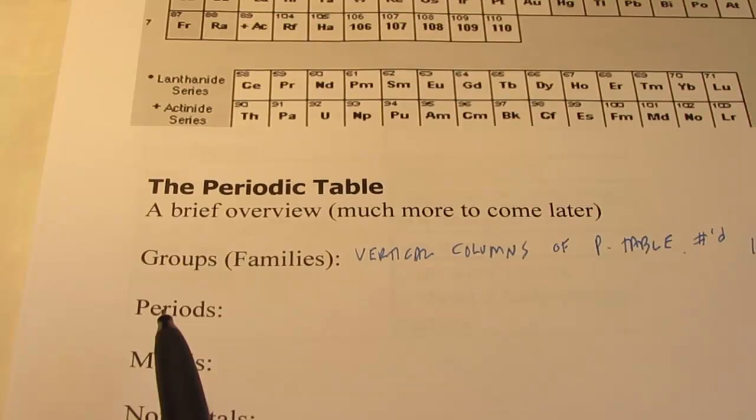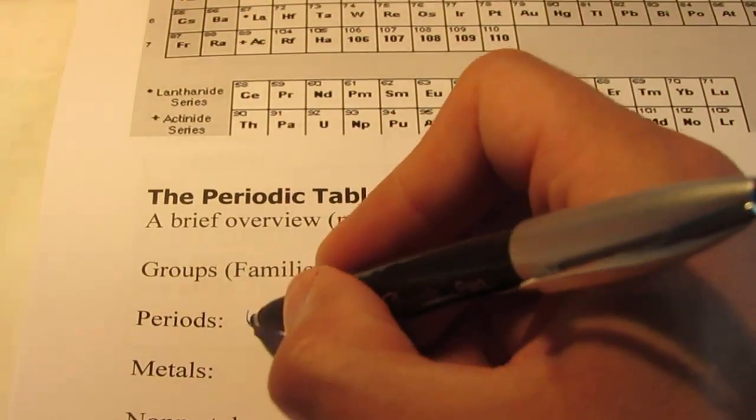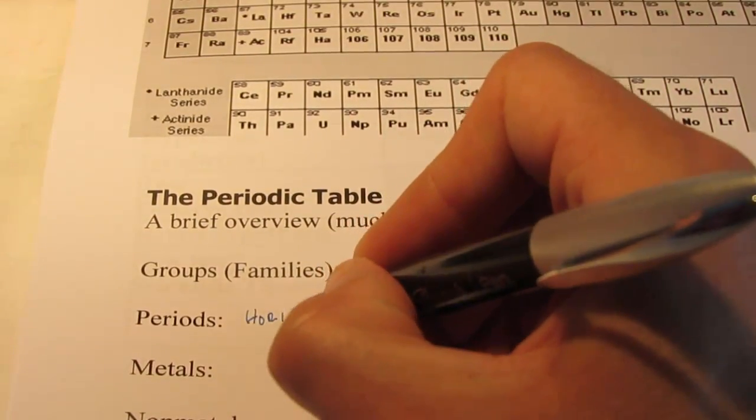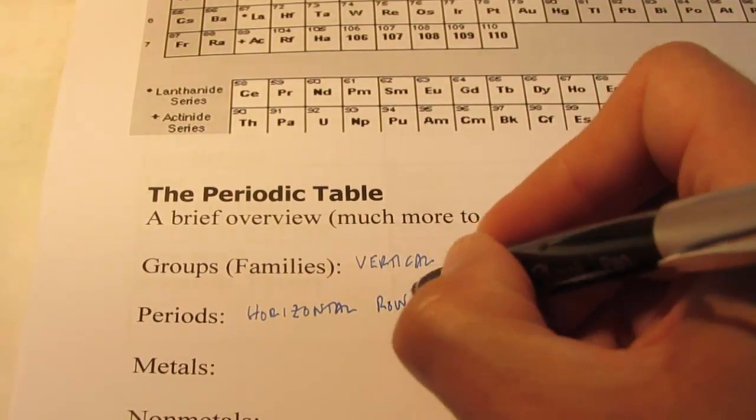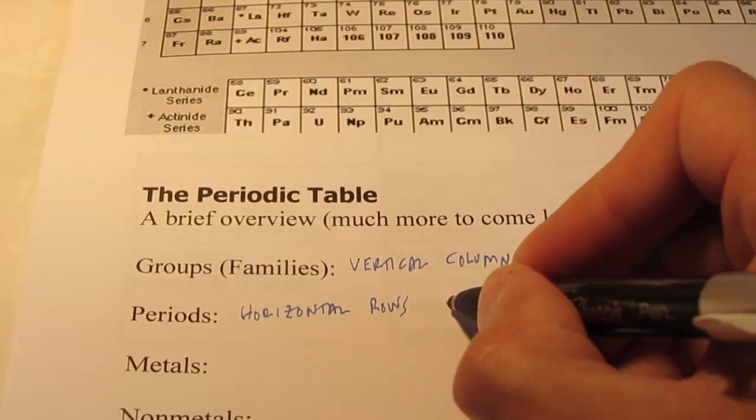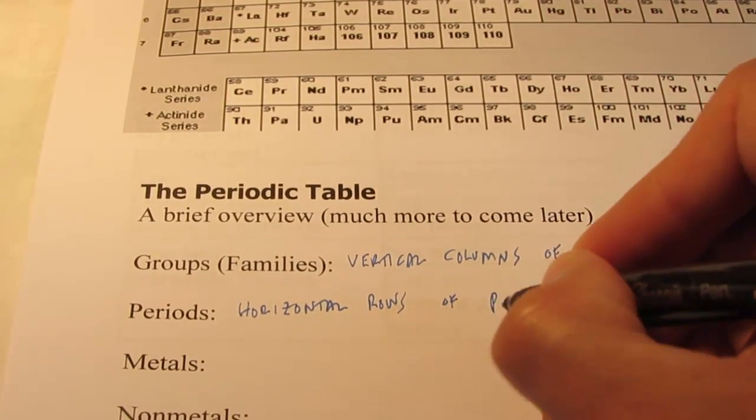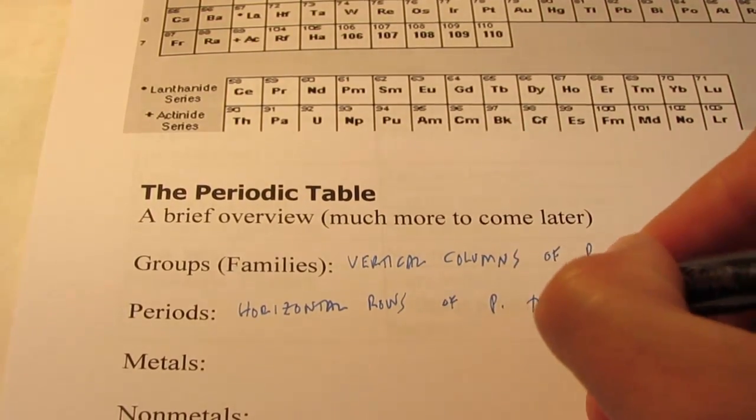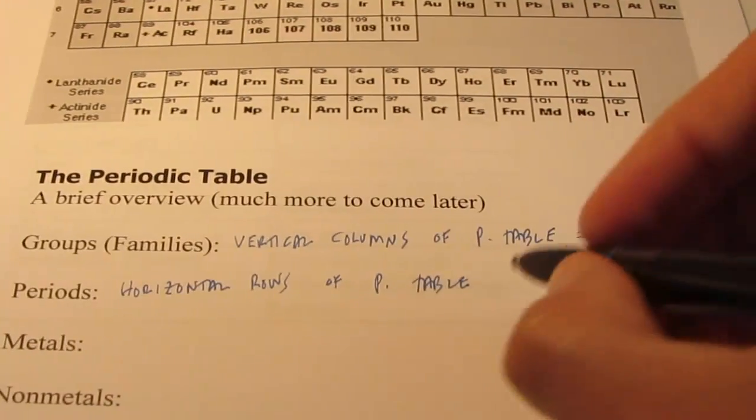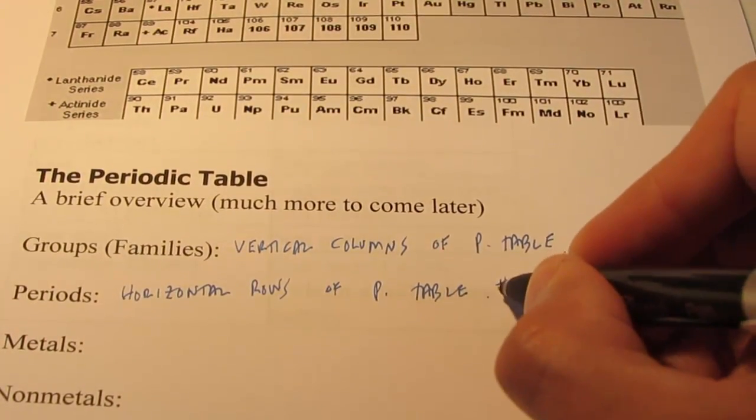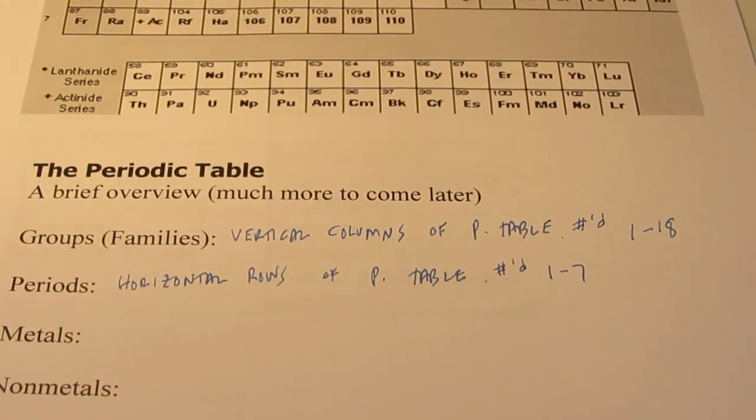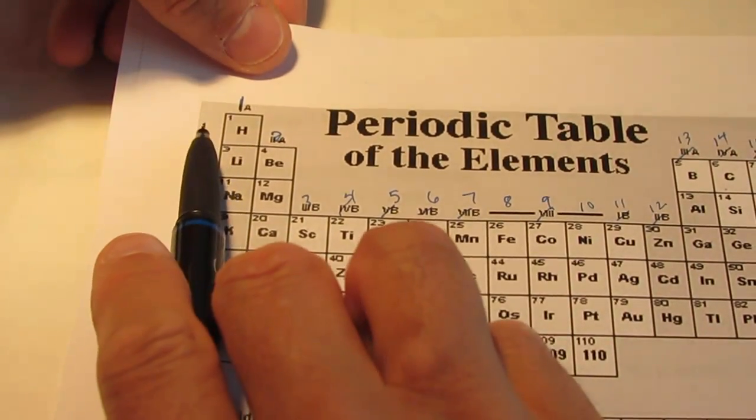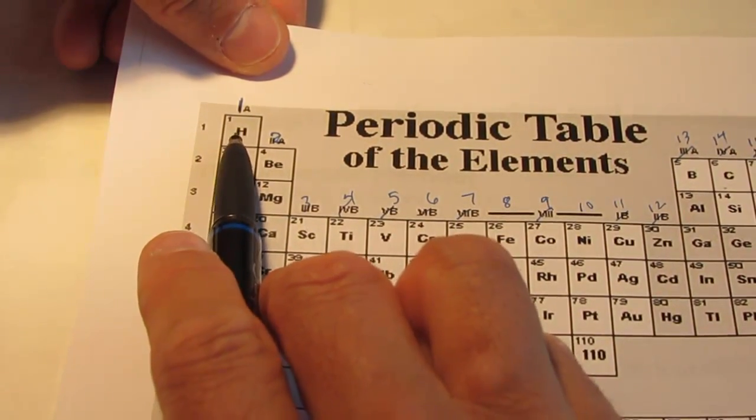Okay, the next term is period. Periods are the horizontal rows of the periodic table. Now, they are also numbered, they are numbered from 1 to 7. So, there are 7 of these rows, or 7 periods. It begins with the first period, which contains the element hydrogen,